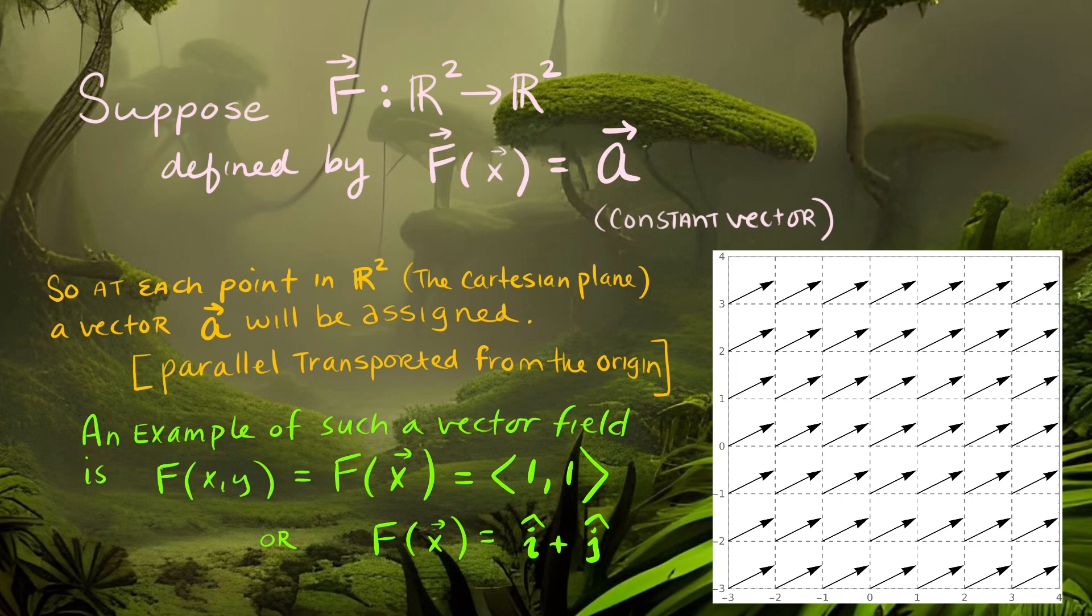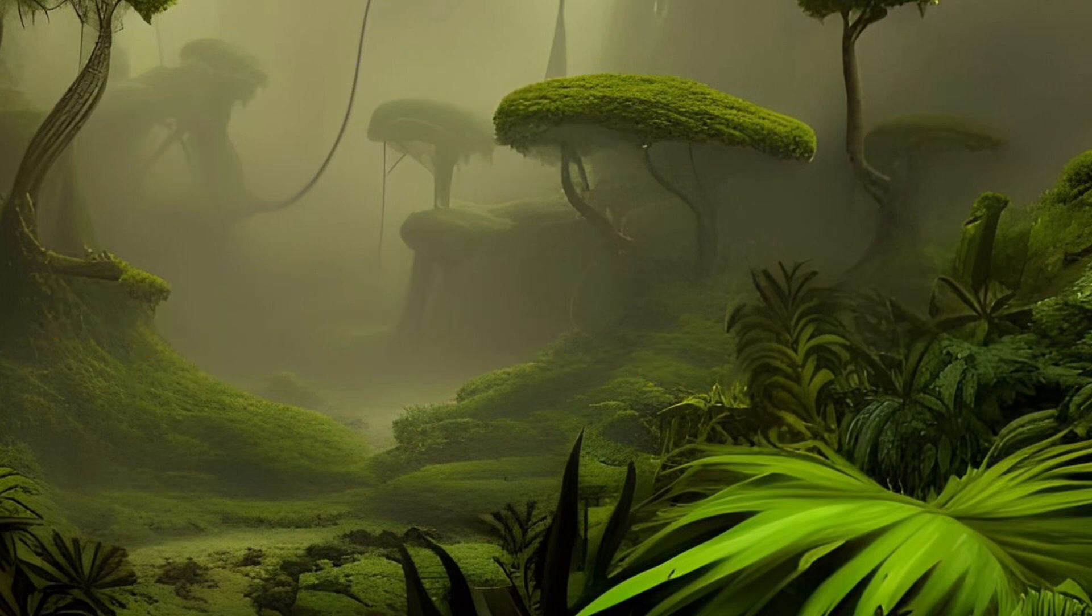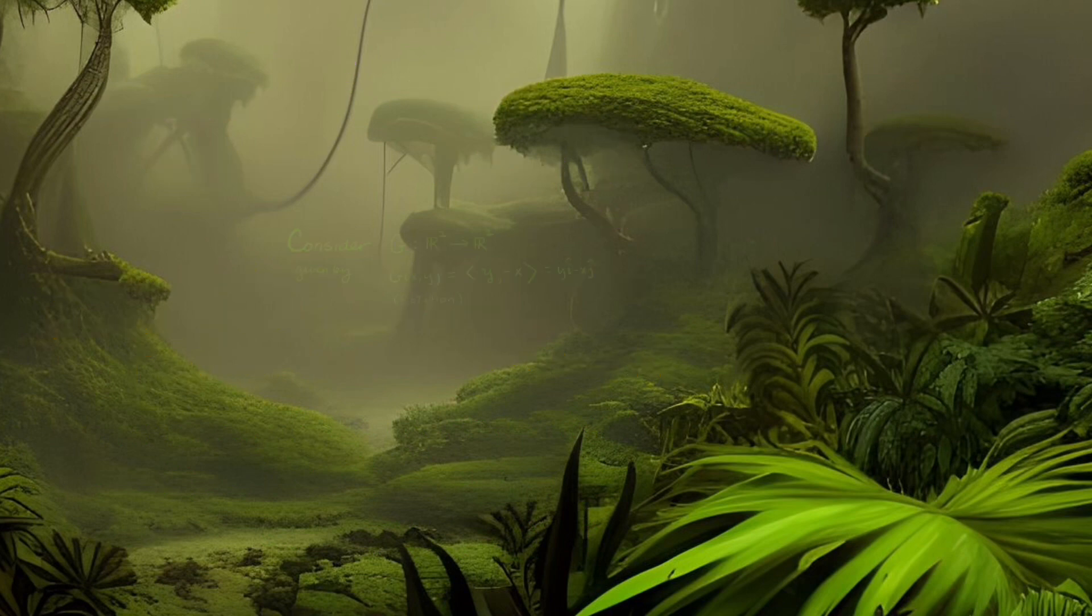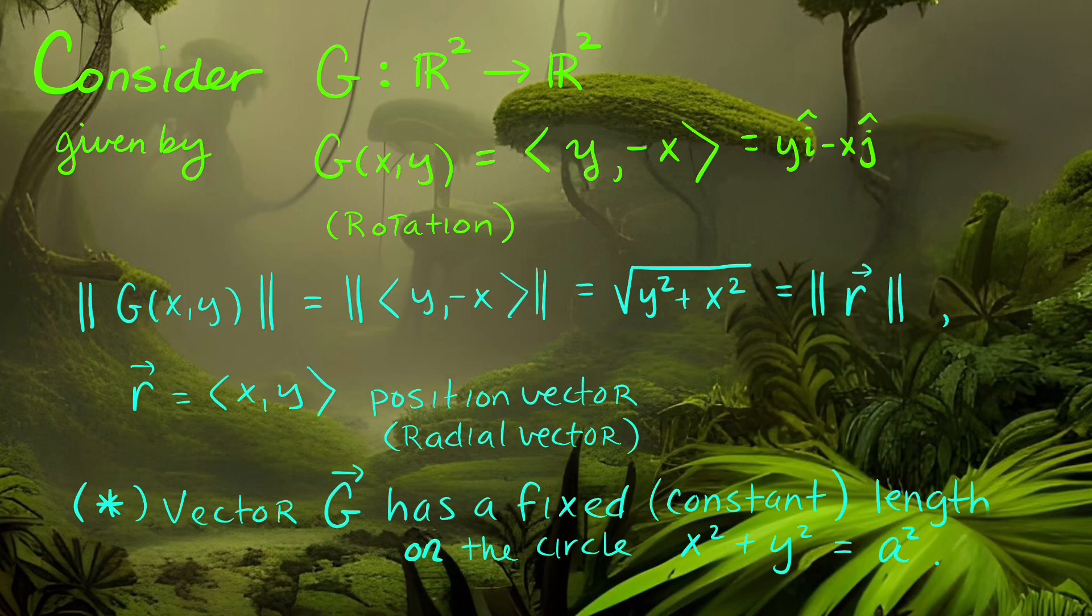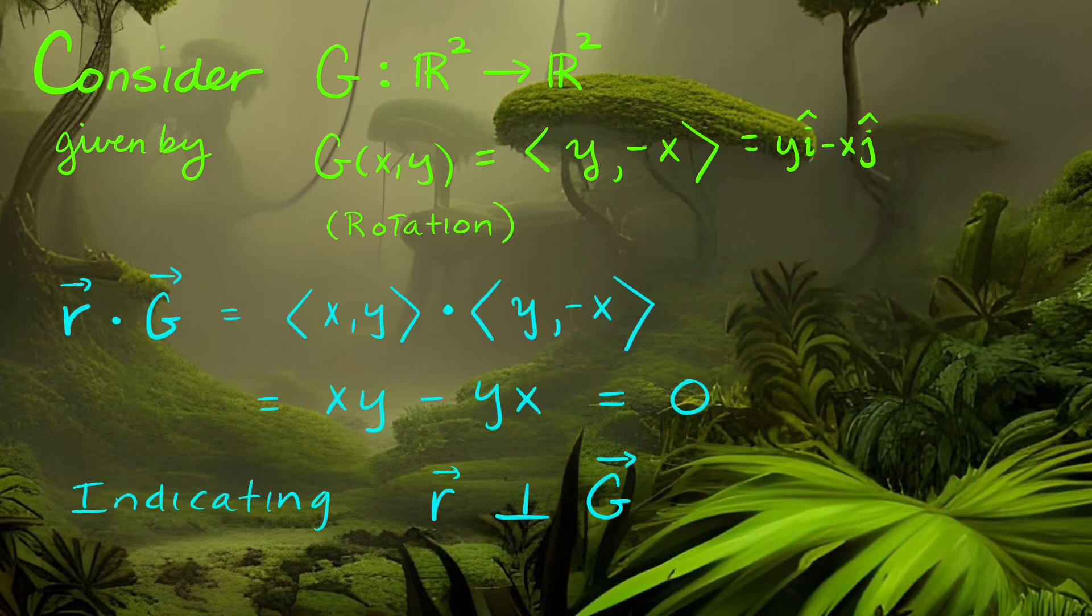Let's consider another force field given by G equals (y, -x), which rotates things in the field around any circular path. The magnitude of this vector field is fixed on a circle of radius a. For different a values we have different circles. Since the dot product of this vector is always perpendicular to the radial vector, G is a tangent vector to this field.